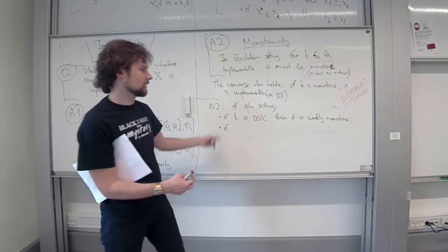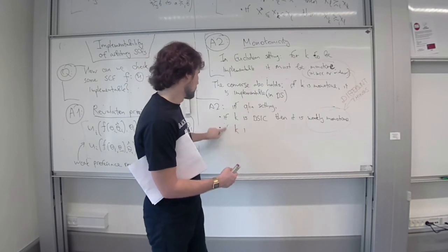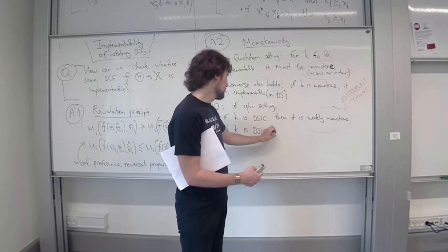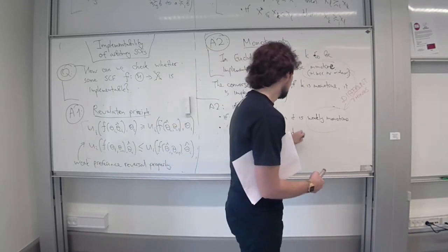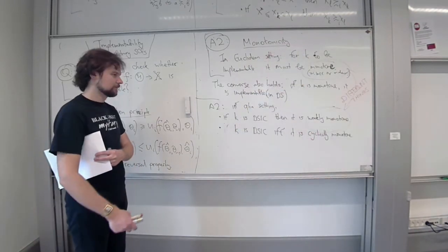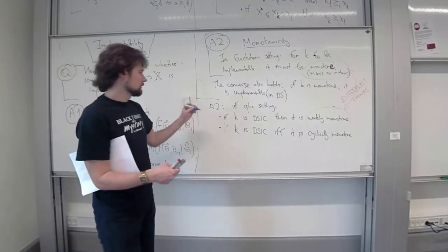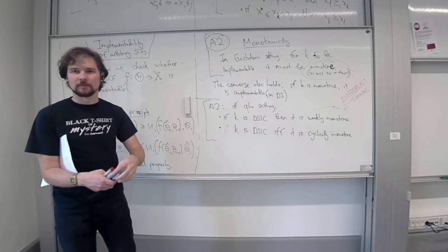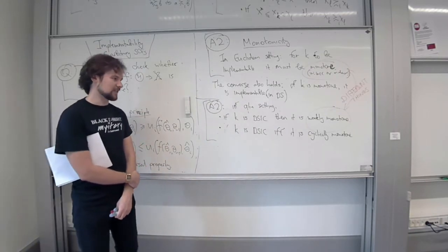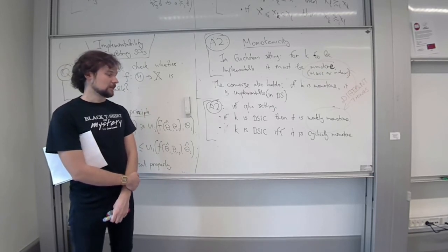In quasi-linear setting, we have no structure over K. It's just some arbitrary set, so we do not have an order with which to compare different allocations. This weakly monotone definition for K will be stated in terms of utilities and preferences. There is another property called cyclical monotonicity - it will actually be necessary and sufficient. K will be dominant strategy incentive compatible if and only if it is cyclically monotone.